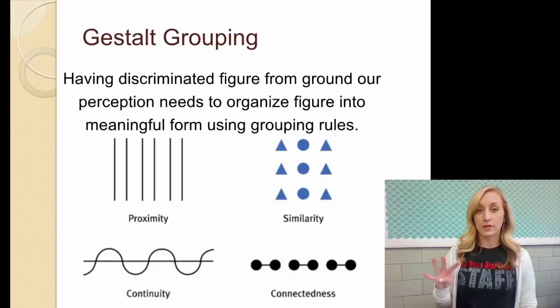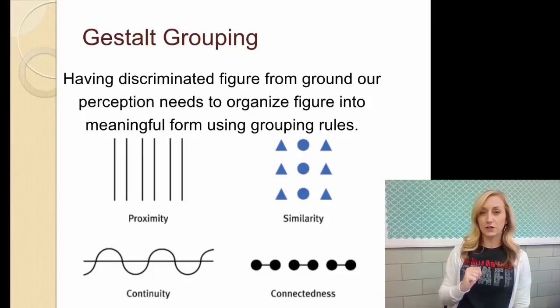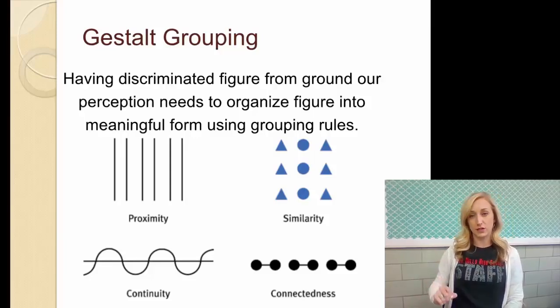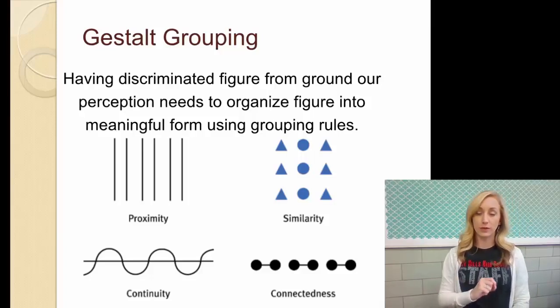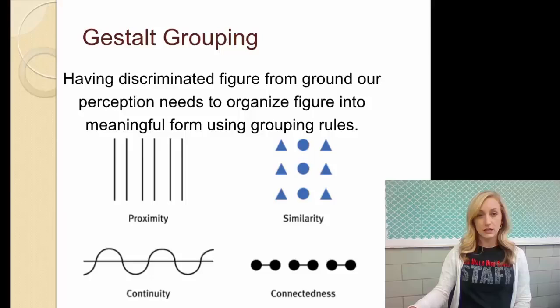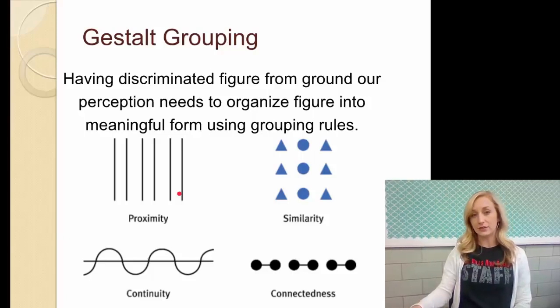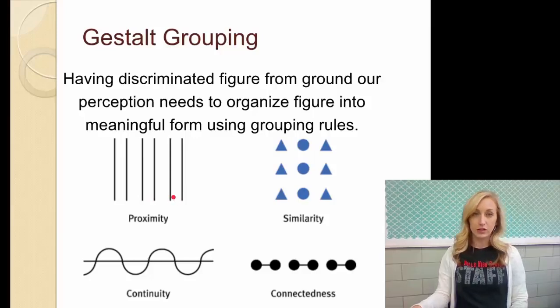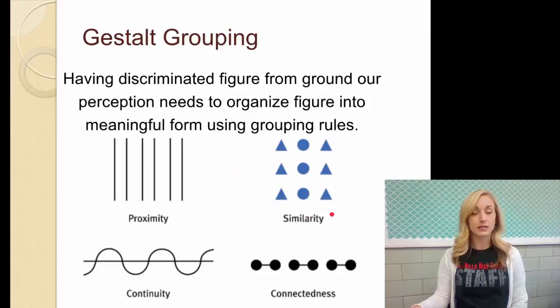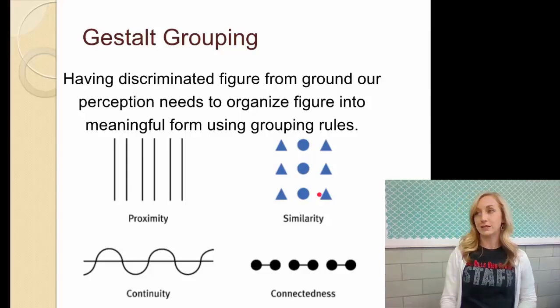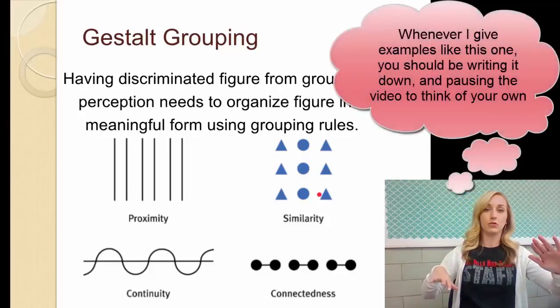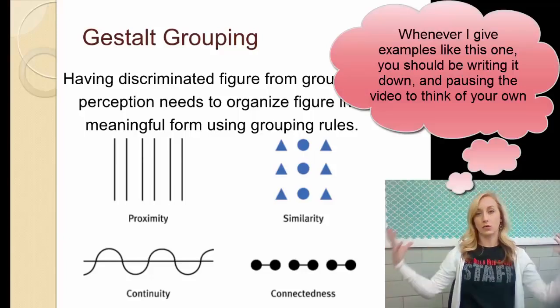Gestalt groupings, and we have four different principles here. Having discriminated a figure from ground, our perception needs to organize figures into meaningful form using grouping rules. So we have proximity, which in this example here, you see three, one, two, and three parallel lines. So you almost see like poles there rather than six different black lines because they are proximal, because they are close to each other. Similarity, you see a line of triangles, a line of circles, and a line of triangles because they are similar. Like just on a basketball court, you see the red jerseys versus the blue jerseys. Because they are similar, you see them as a cohesive whole.